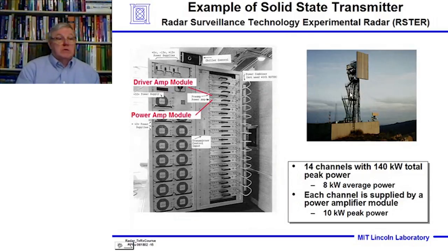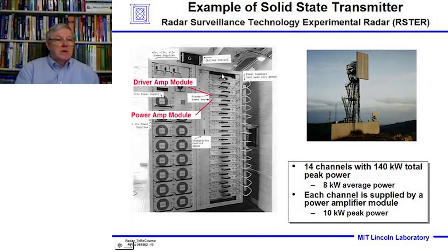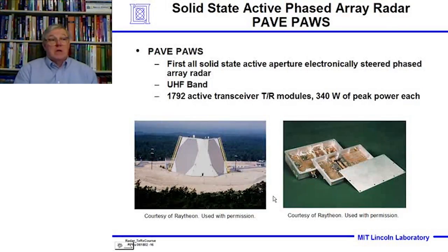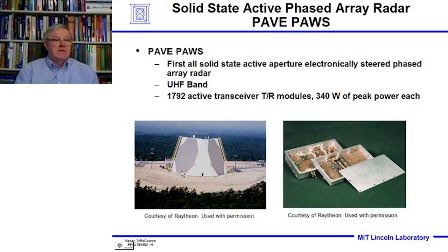Now let's look at solid state transmitters. One example built by the laboratory is the Radar Surveillance Technology Experimental Radar — acronym RISTER. It's a solid state transmitter with 14 channels of power amplifier modules providing 140 kilowatts of total peak power and 8 kilowatts of average power, with a higher duty cycle than tube-based systems. The first active solid state radar, PAVE PAWS, has a 75-foot diameter aperture.